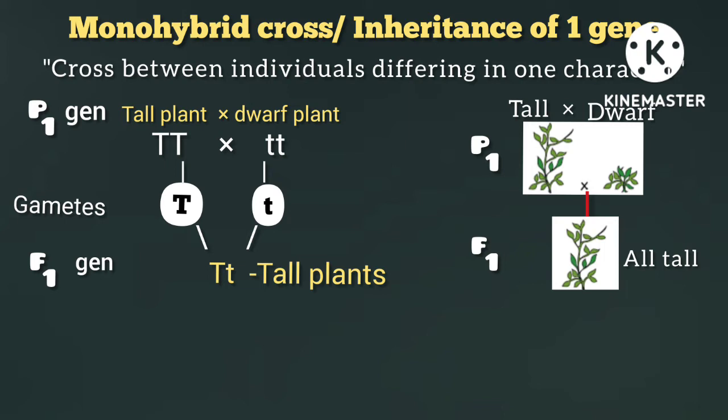The parents were homozygous tall (TT) and homozygous dwarf (tt). When crossed, the F1 plants are heterozygous tall (Tt). Capital T and small t are alleles of each other. Again, watch part 2 on important terms of genetics for more clarity.